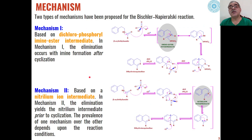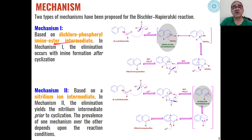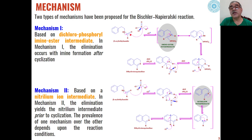As far as the mechanism of this reaction is concerned, in literature two types of mechanisms have been proposed. Mechanism one is based on a dichlorophosphoryl-aminoester intermediate. In the first step, the lone pair on nitrogen of the beta-aryl ethylamide leads to the formation of a carbon-nitrogen double bond, and the electronegative oxygen attacks the electropositive phosphorus group with elimination of chloride.